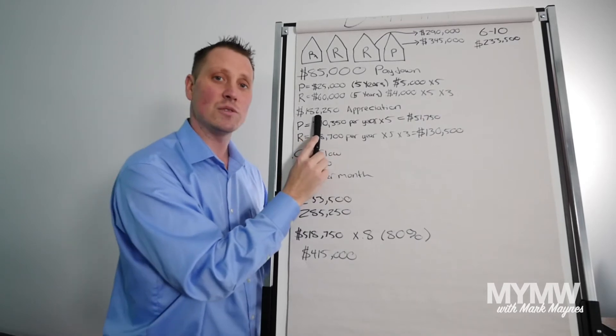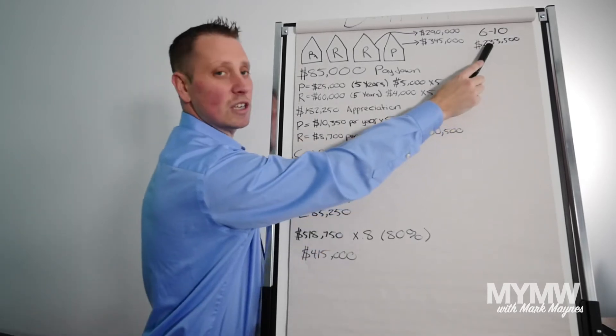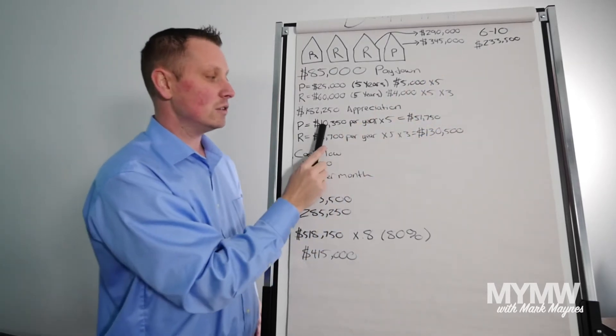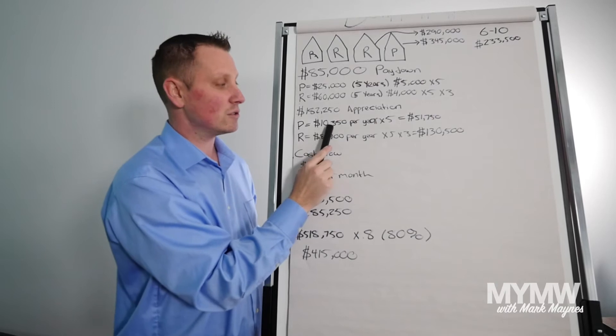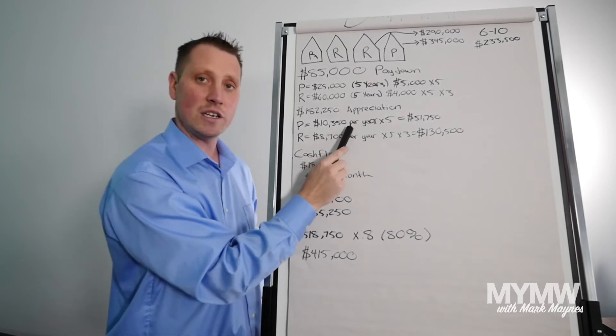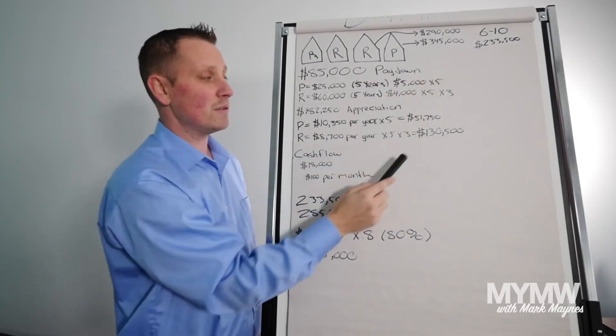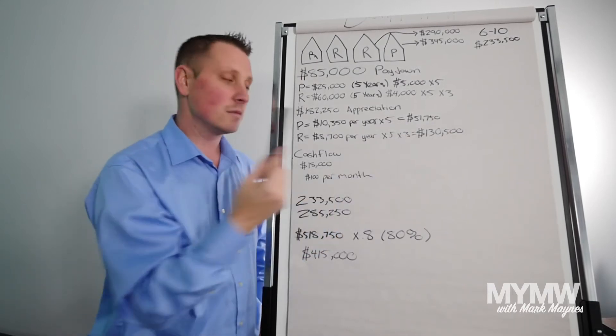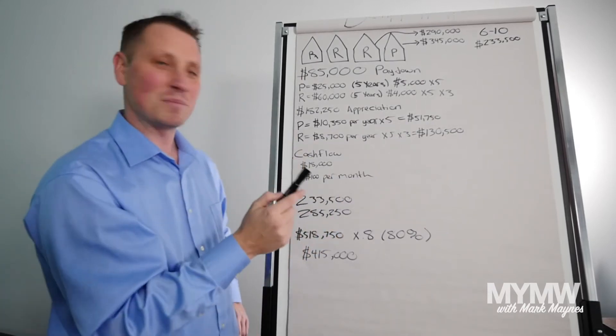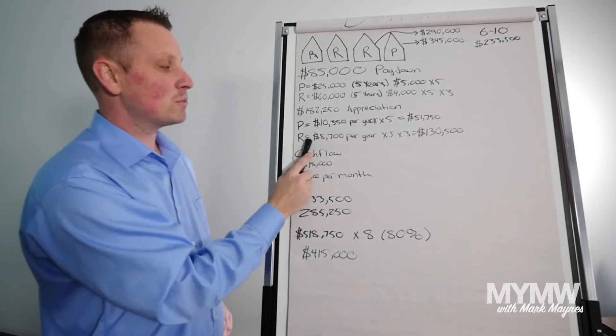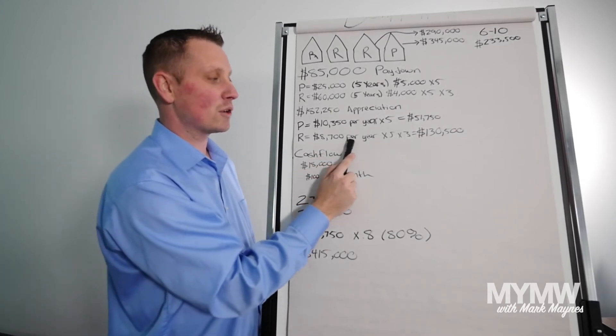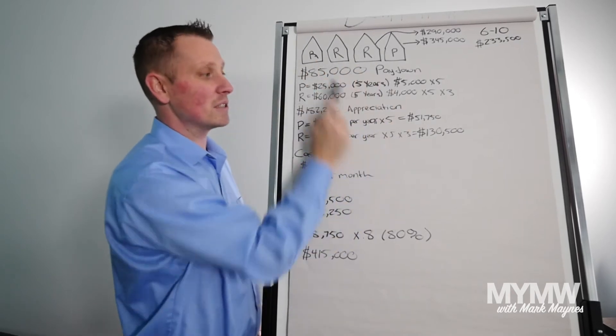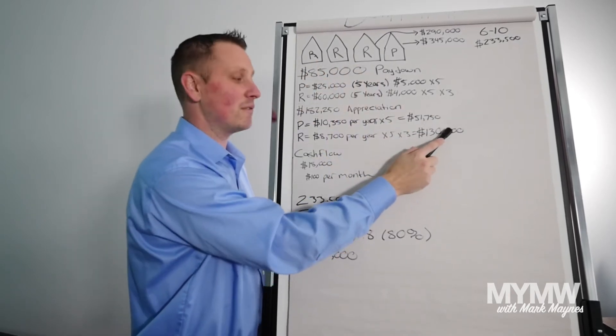Appreciation, $182,250. So you've almost doubled your net worth just on the appreciation. How did I get that number? Your personal, you're going up $10,350 per year. That's 3% of $345,000, which is $51,750. Rental property, $8,700 per year times five times three because you have three properties. So it's $130,500.